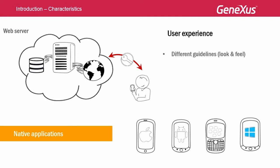The user will require that all applications for his device have a similar look and feel to that of his native applications — for example, his contacts application, calendar, and the way of going back in the device itself. That is to say, following the guidelines of his platform. The user will also require integration with the other functionalities of the smart device, such as the calendar or contact list, and also in relation to hardware, like the photo camera, phone calls, or GPS.